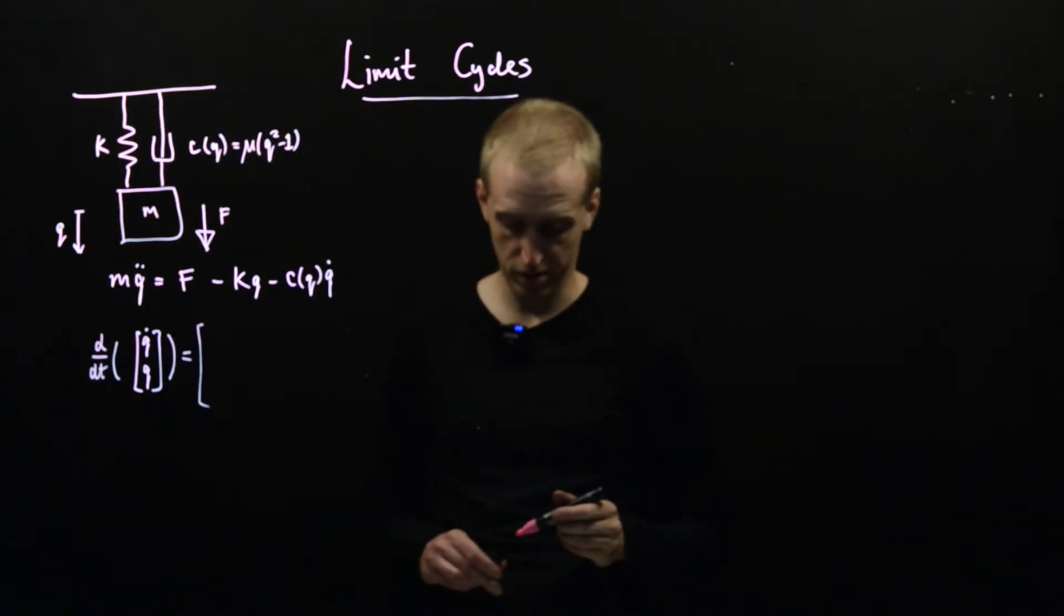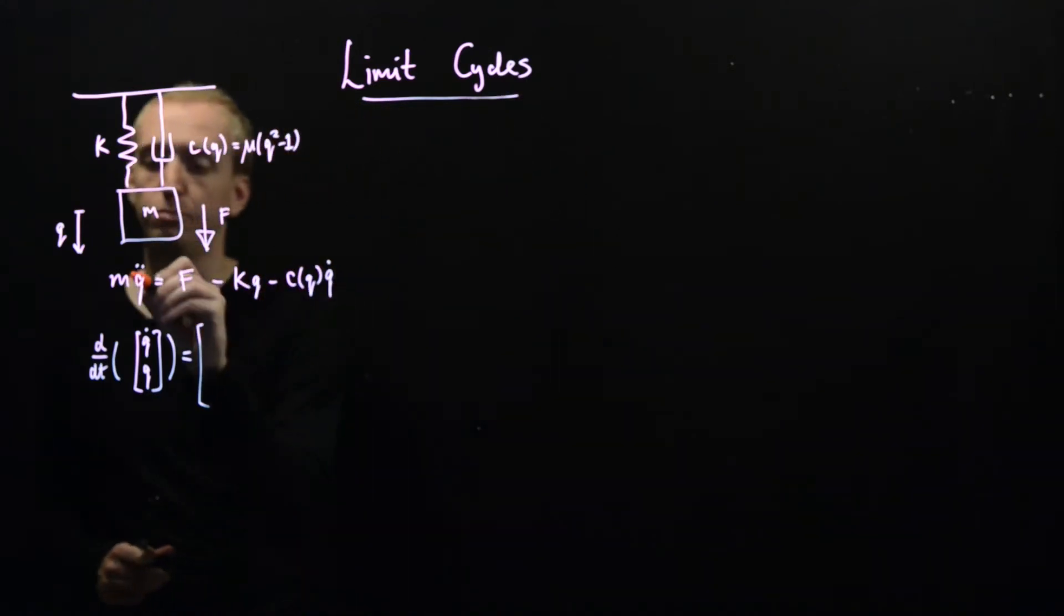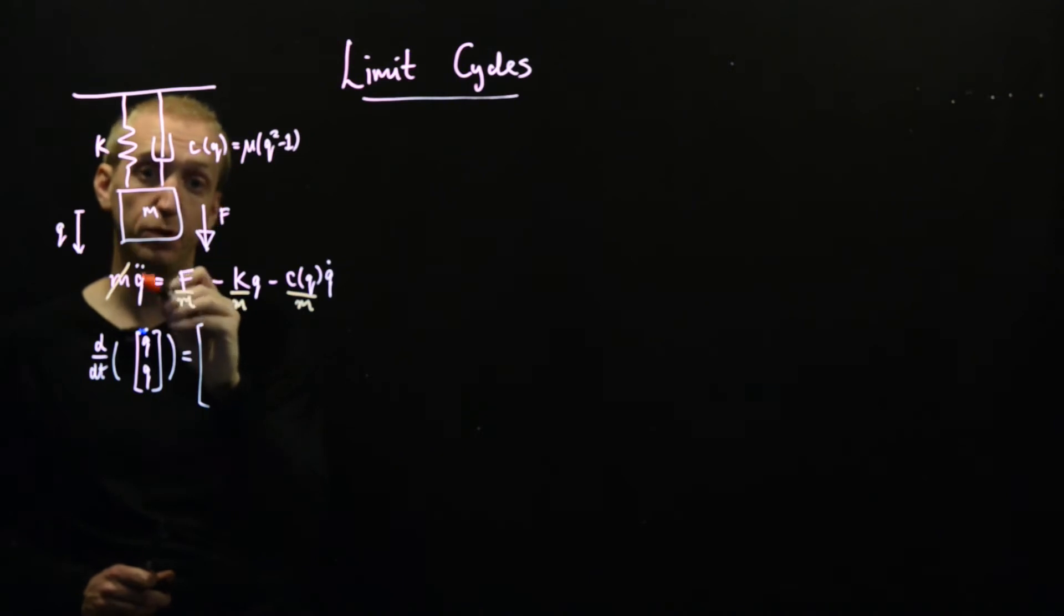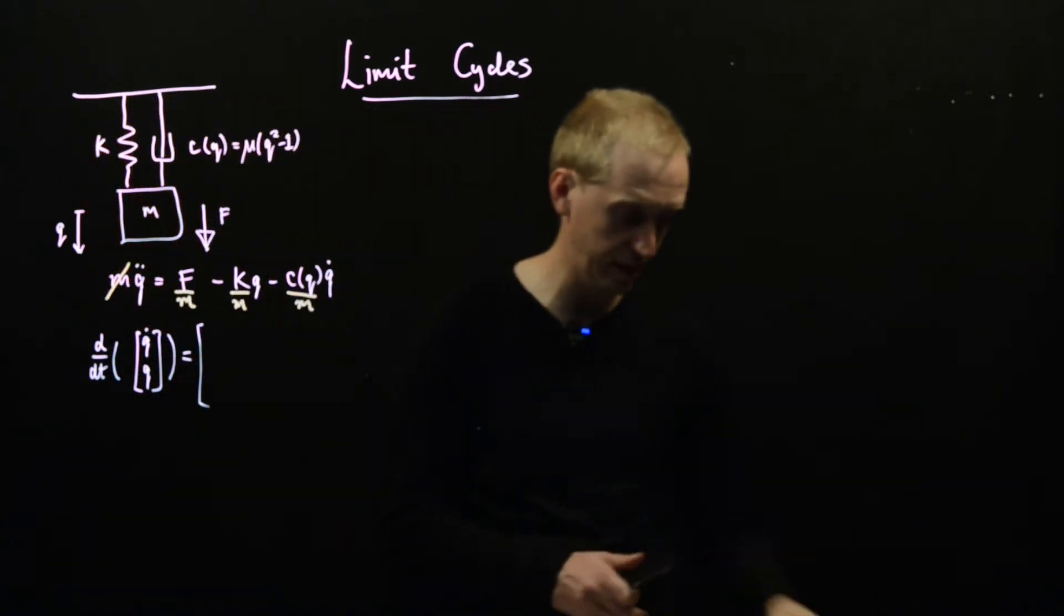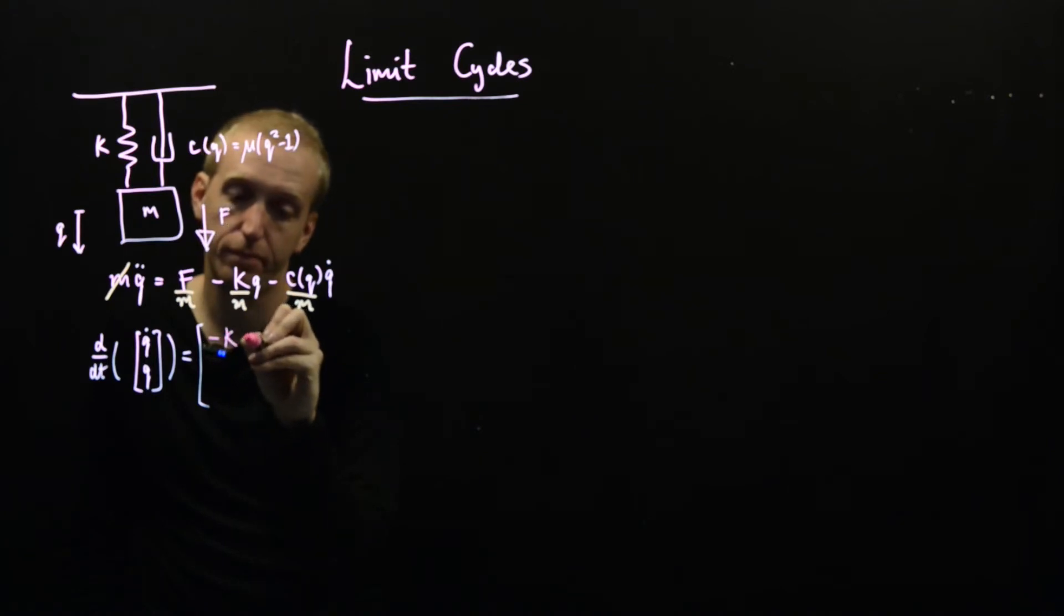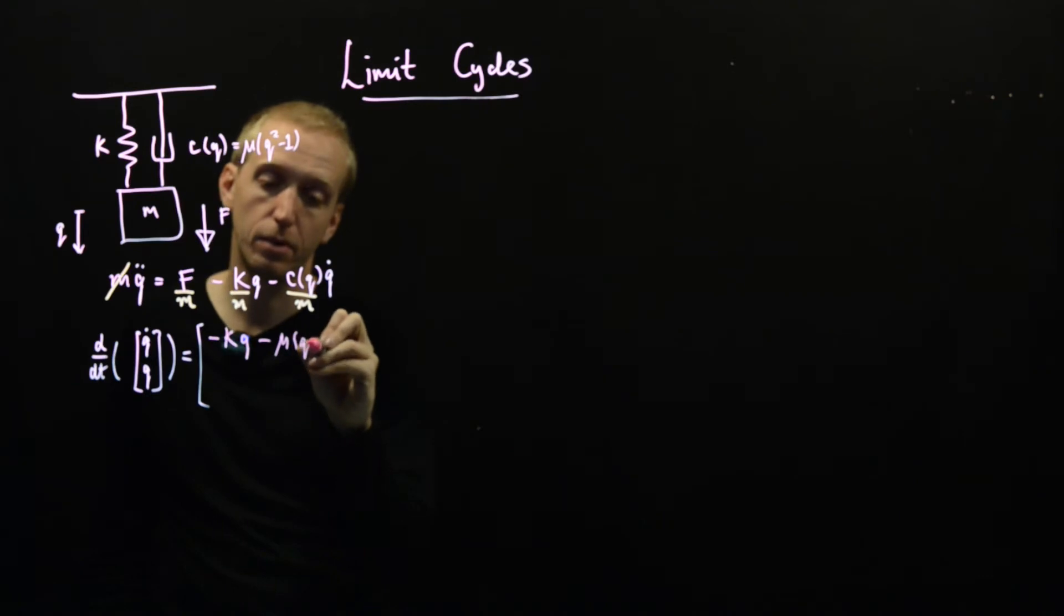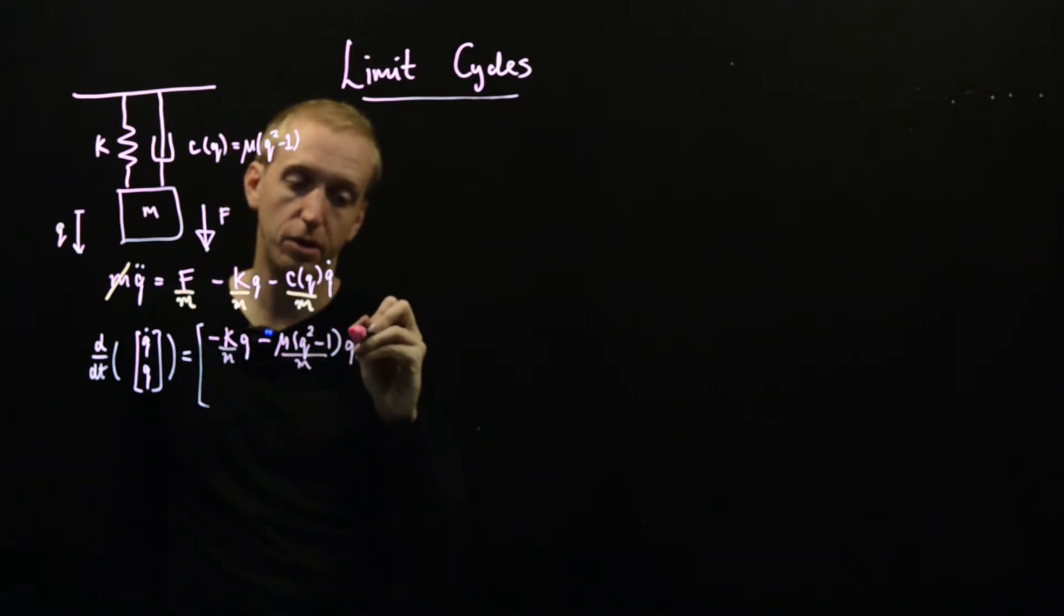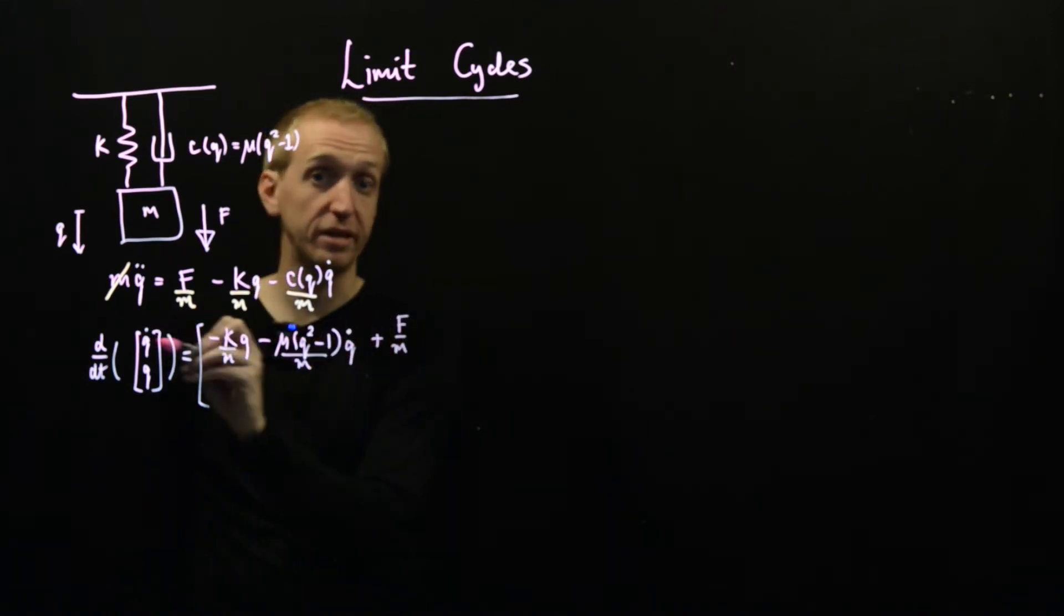So we're going to say that our state vector is Q dot Q. So it consists of the position and of the velocity. And in our state space form we know we need d by dt of this to equal some stuff. So what is that stuff? Well we can't go directly from this equation here but after a little bit of simplification we can. So in particular if we divide through by the mass then we have a nice equation for Q double dot. And so we can start to fill in this relationship here. So this is d by dt of Q dot. So Q double dot is equal to something. And what is that something? Well we now just read straight from our equation. And so we have a minus K Q over M. A minus C of Q Q dot. So let's just substitute in our relationship. So we have mu Q squared minus 1, I already forgot my M, so we divide through by M, Q dot. And then we also have a plus F over M.